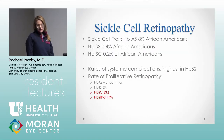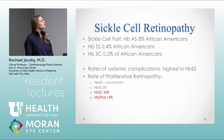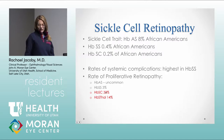The most common abnormality is hemoglobin SS disease, which has more systemic complications and not as high a rate of ocular complications. The rate of proliferative retinopathy is highest in hemoglobin SC disease — that has definitely been tested.